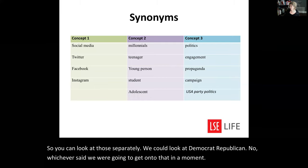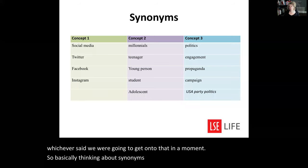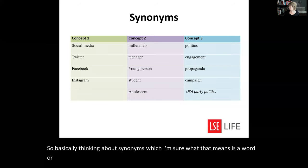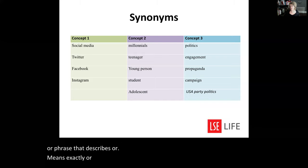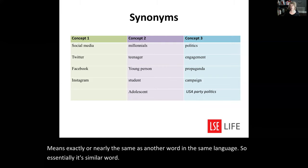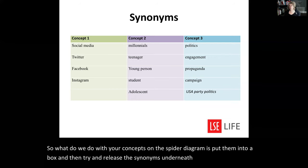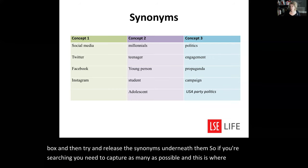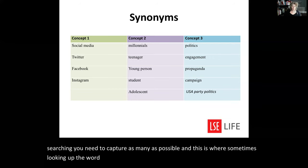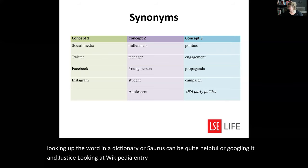Thinking about synonyms — a word or phrase that describes or means exactly or nearly the same as another word in the same language. What I would do with the concepts in your spider diagram is put them into a box and then list the synonyms underneath them. When you're searching you need to capture as many as possible. Looking up the word in a dictionary or googling it and checking a Wikipedia entry can be quite helpful to see how it describes that word.